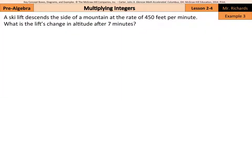Example 3. A ski lift descends the side of a mountain at the rate of 450 feet per minute. What is the lift's change in altitude after 7 minutes? Well, one of the keys here is we need to recognize that we're descending, which means that we're going down. So when we go down 450 feet per minute, we're going to represent that by the negative integer negative 450.